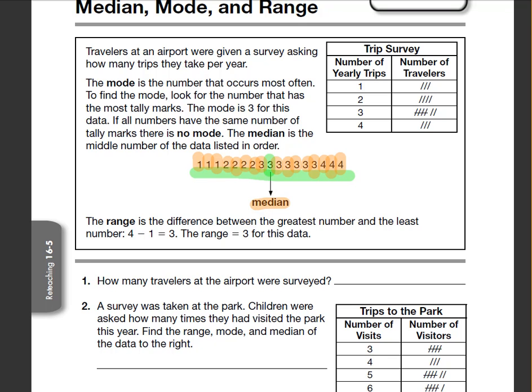The range, when you're finding the range, what you do is you take the greatest number, which is 4, and you subtract the least, which is 1. So the range would be 4 minus 1, the range is 3.